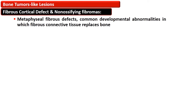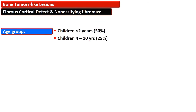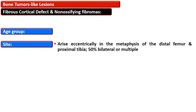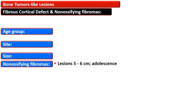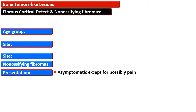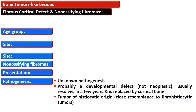Fibrous cortical defect and non-ossifying fibromas are grouped together as metaphyseal fibrous defects. These are common developmental abnormalities in which fibrous connective tissue replaces bone. Children above the age of two years are affected in about 50% of cases, while 25% of patients are between 4 to 10 years. The lesions arise eccentrically in the metaphysis of the distal femur and proximal tibia, and 50% of cases are bilateral or multiple. Small lesions of 0.5 cm or less are fibrous cortical defects, while lesions of 5 to 6 cm are termed non-ossifying fibromas, usually diagnosed in adolescence.